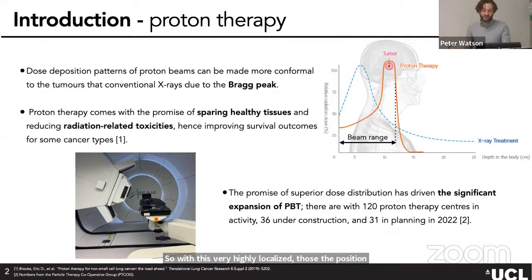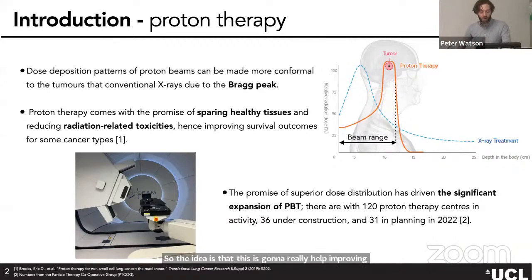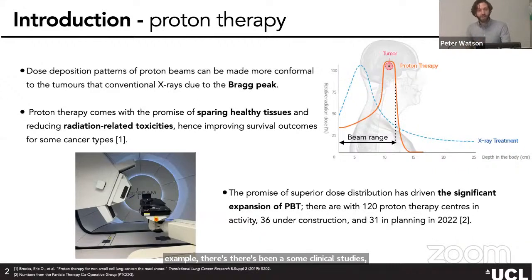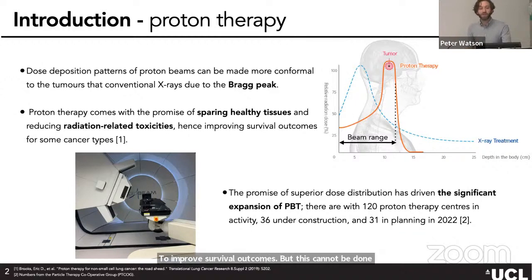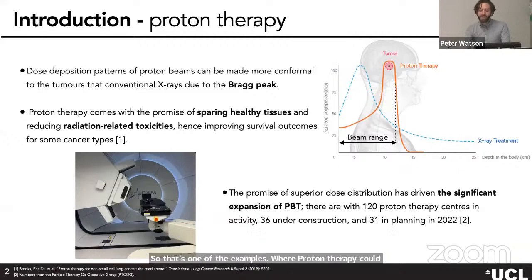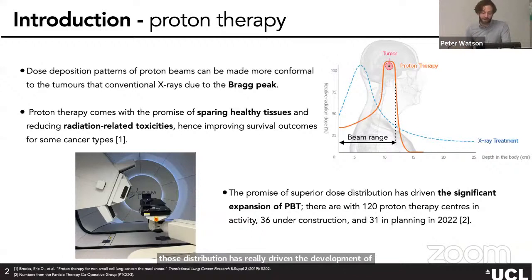The range of the Bragg peak depends on the energy of the protons and the tissues they cross. With this highly localized dose deposition, proton therapy comes with the promise of sparing healthy tissues and reducing radiation-related toxicity. For example, clinical studies have shown that for lung cancer, dose escalation improves survival outcomes, but this can't be done with photon radiotherapy because it gives too much secondary dose to the heart.